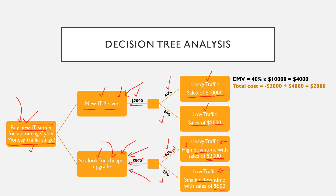To calculate EMV for buying a new IT server with heavy traffic: there is a 40% chance of making $10,000, which gives an expected value of $4,000. The total cost is minus $2,000 (cost of the new server) plus $4,000 (expected sales), giving a net EMV of $2,000 for the heavy traffic scenario.